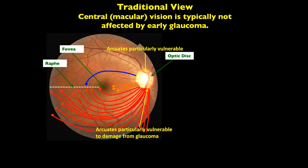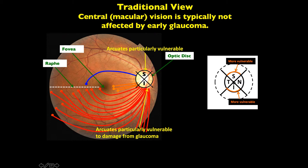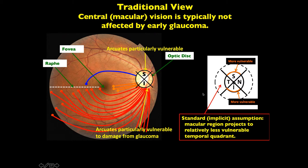The traditional view about macular vision is that it's not affected by early glaucoma. The reason is that it's traditionally assumed the inferior and superior arcuate zones are most vulnerable, but the axons from ganglion cells in the macular or central part of the eye come into the temporal region, which is less vulnerable to damage. The macula is approximately plus or minus 8 degrees.